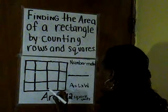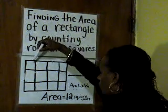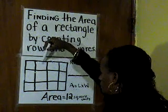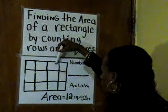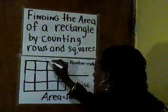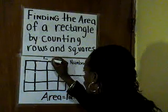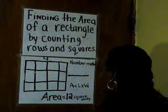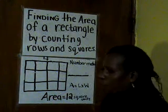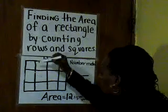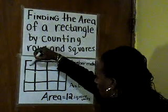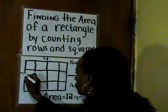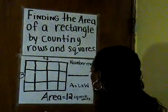We will begin by counting the number of rows using 1, 2, 3, 4. There are 4 rows, and then we count how many squares per row, which is 1, 2, 3 right here.